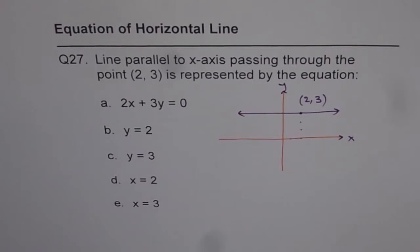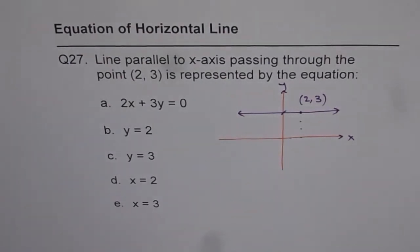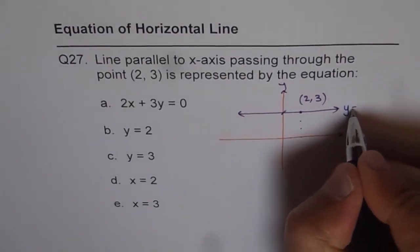As you will observe, slope is 0, right? Slope is 0 and what is y-intercept? y-intercept is also 3. So the equation is y equals to 3.